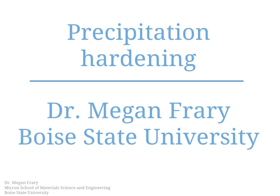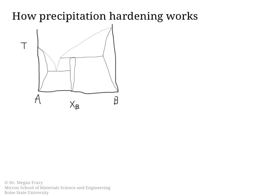In this video I'm going to talk about precipitation hardening and how that increases the strength of materials. Let's begin by looking at how precipitation hardening takes place. So let's consider that we have some binary AB alloy, and if we are operating in this range over here, if we have a composition that's in this area, this would lead to solid solution strengthening.